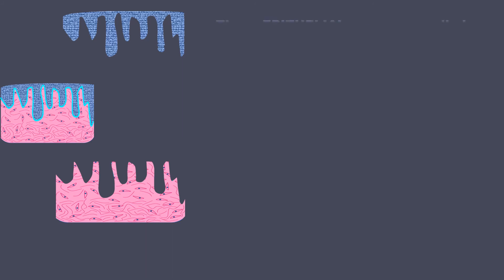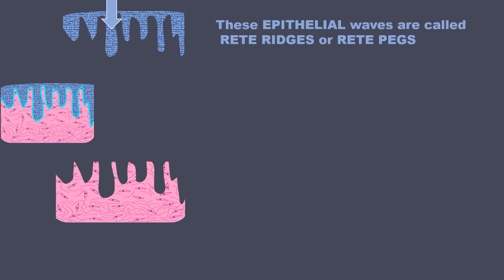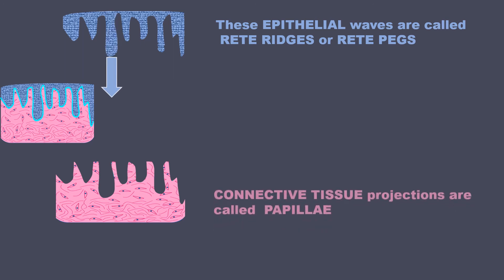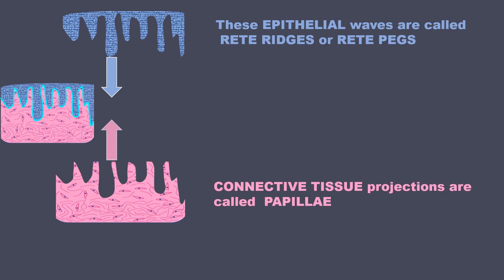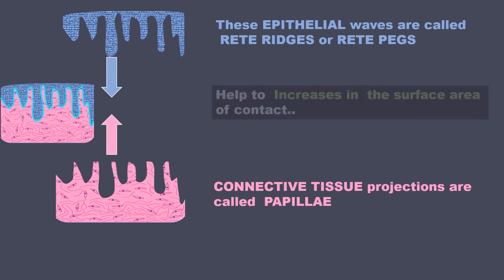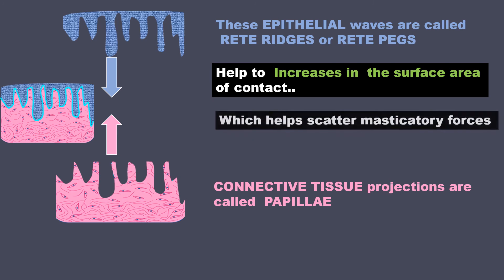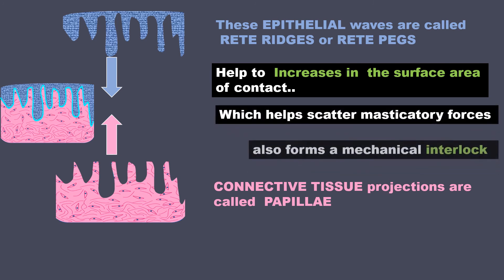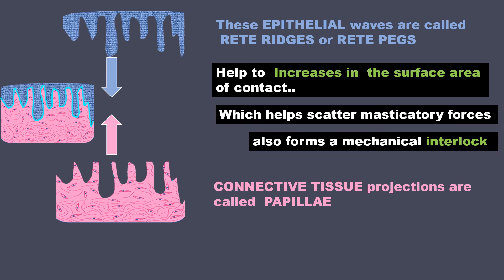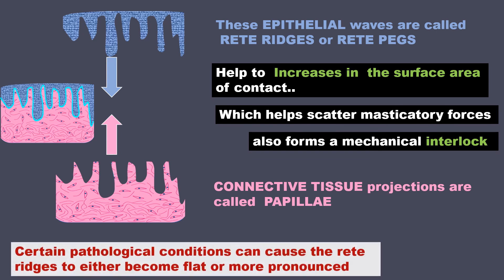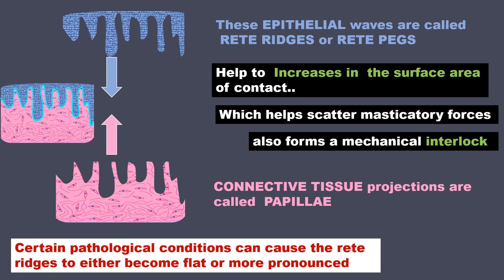Coming back to the histology of the mucous membrane, let us split it into the epithelial part and the connective tissue part. When you look at the epithelium, it seems to be dropping down as waves into the connective tissue — these are called the rete ridges or rete pegs. The connective tissue, on the other hand, seems to be projecting up into the epithelium — these are called the connective tissue papillae. This increases the surface area of contact between the epithelium and connective tissue, helping to scatter masticatory forces and also forming a mechanical interlock. Certain pathological conditions can cause the rete ridges to either become flat or more pronounced.